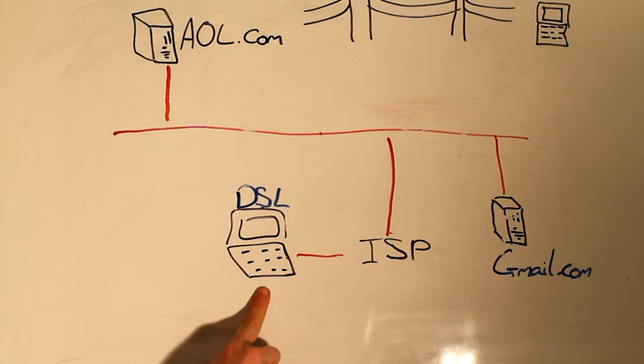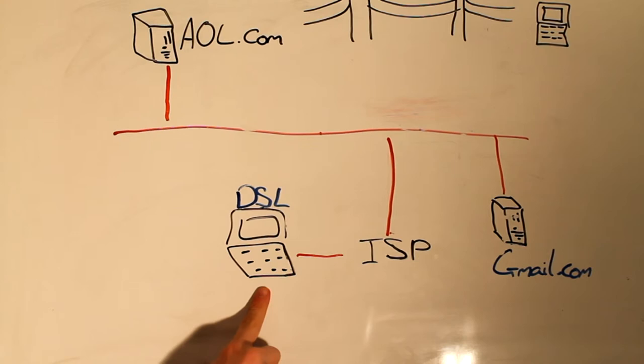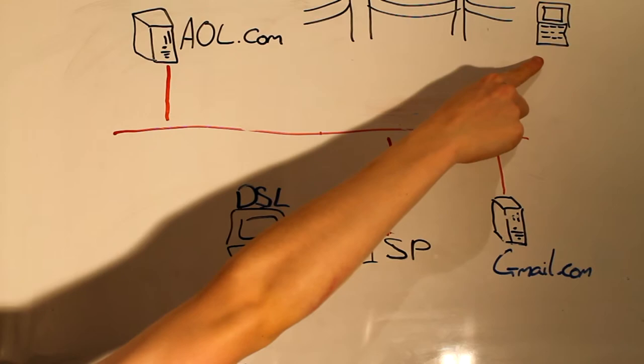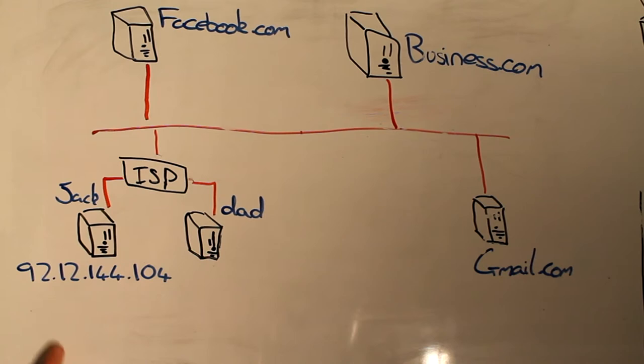If I wanted to send an email, the email for me will go from my computer, to DSL, to my ISP, to gmail.com. From Gmail, to the internet, to another server, let's say AOL.com, to Powerlines, to whoever's computer I'm sending the email to. Everything has an IP address.